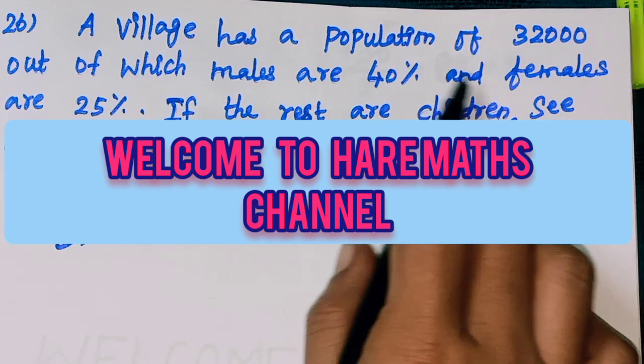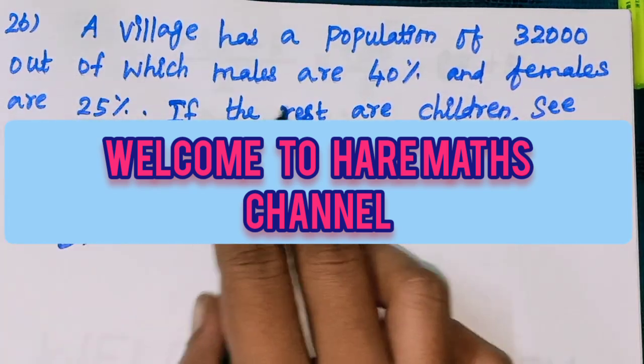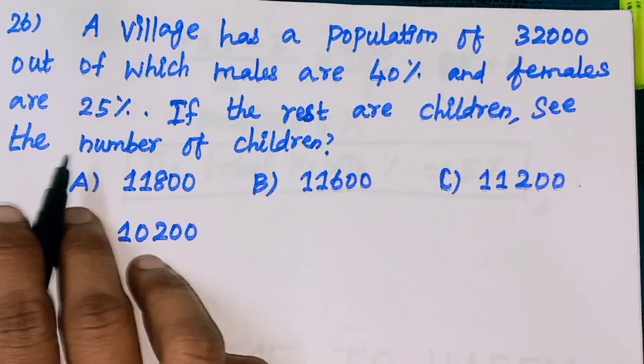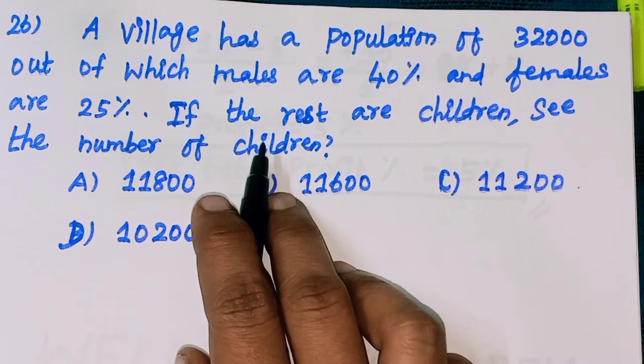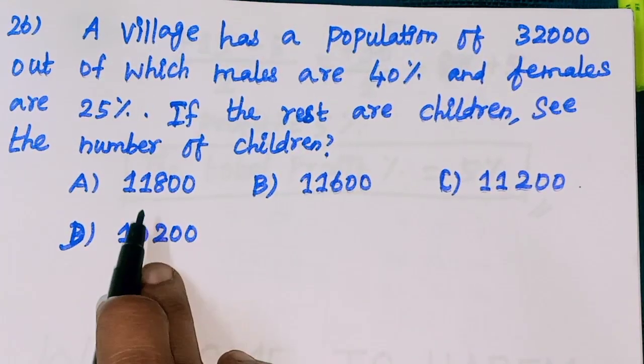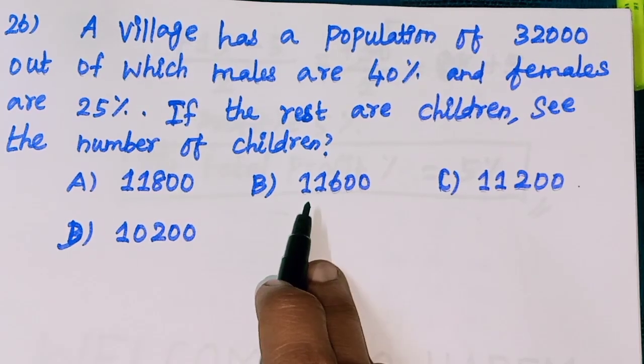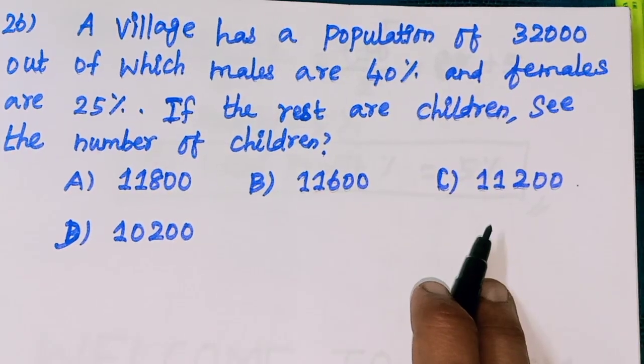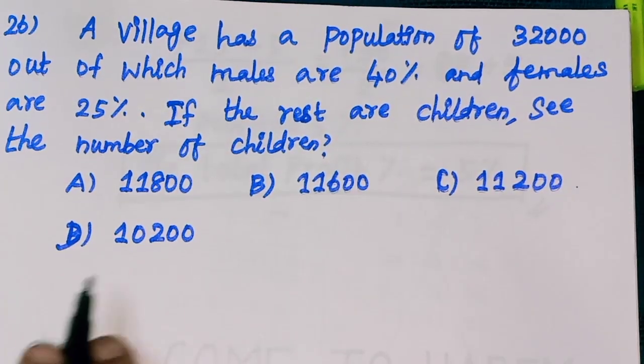A village has a population of 32,000 out of which males are 40% and females are 25%. If the rest are children, see the number of children. Option A: 11,800, Option B: 11,600, Option C: 11,200, Option D: 10,200.